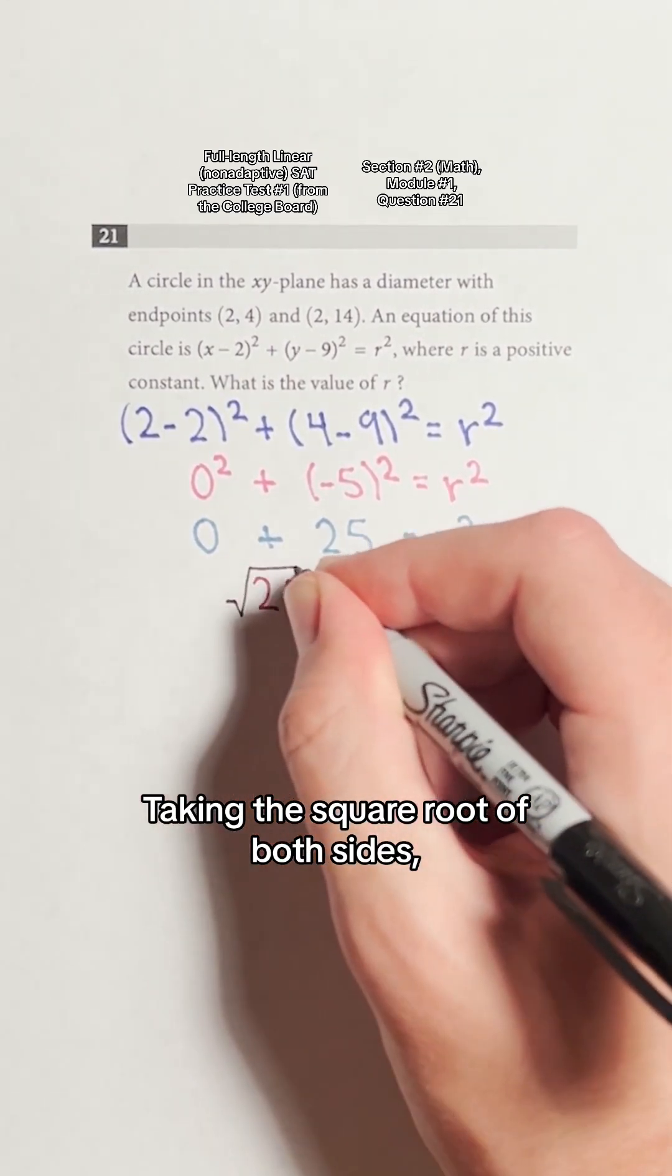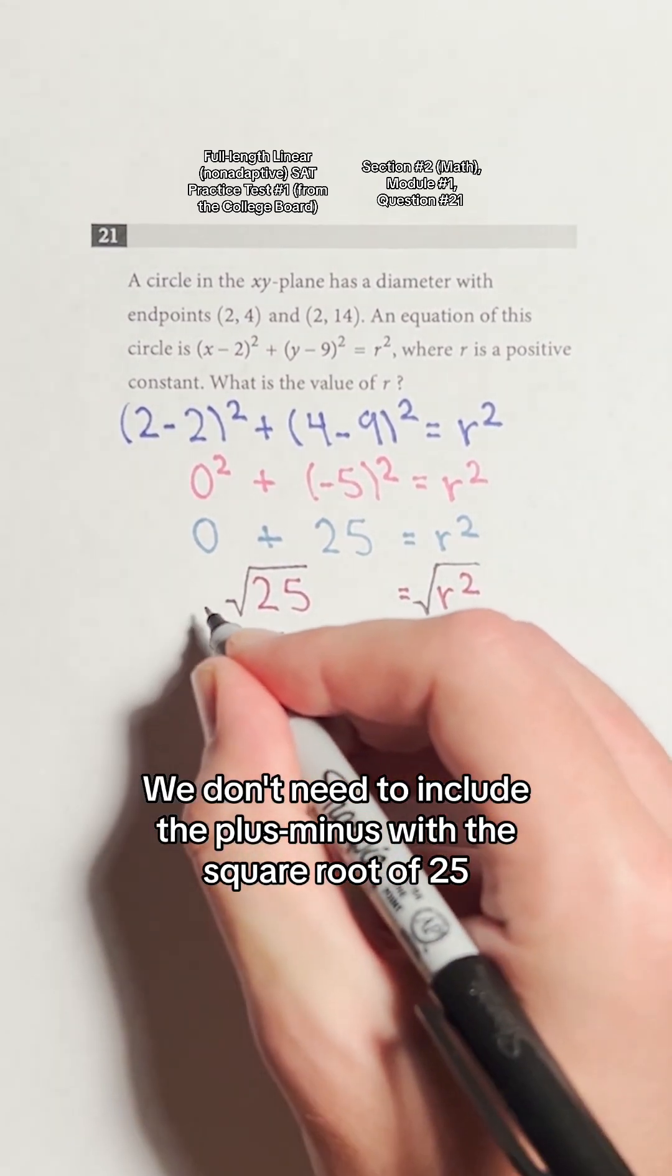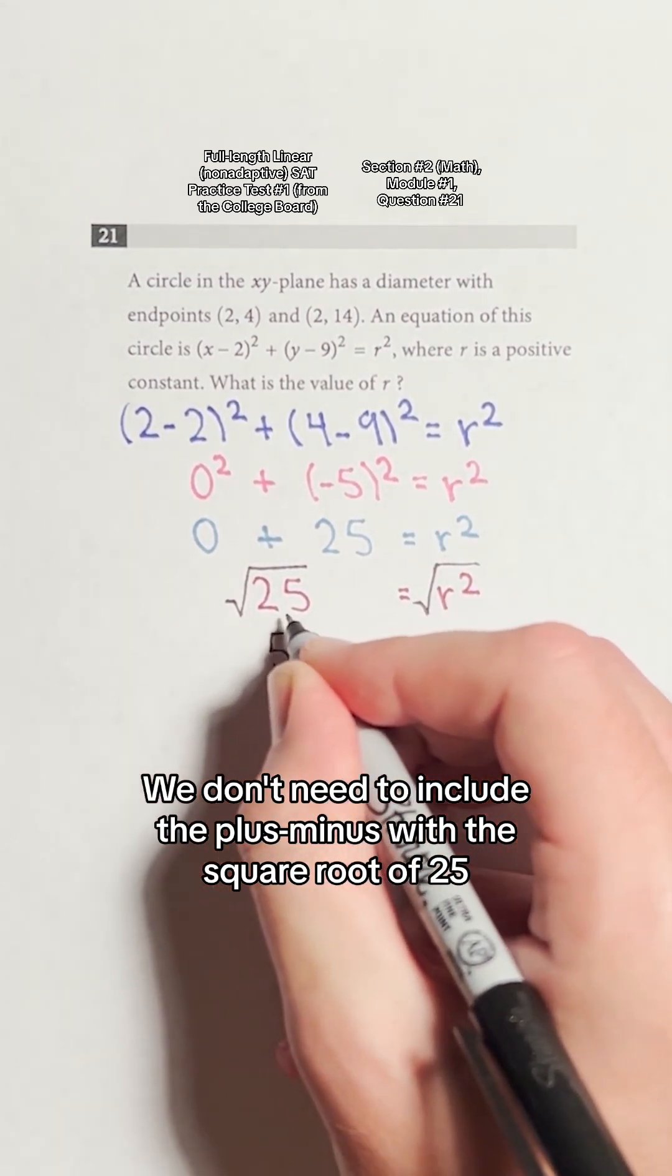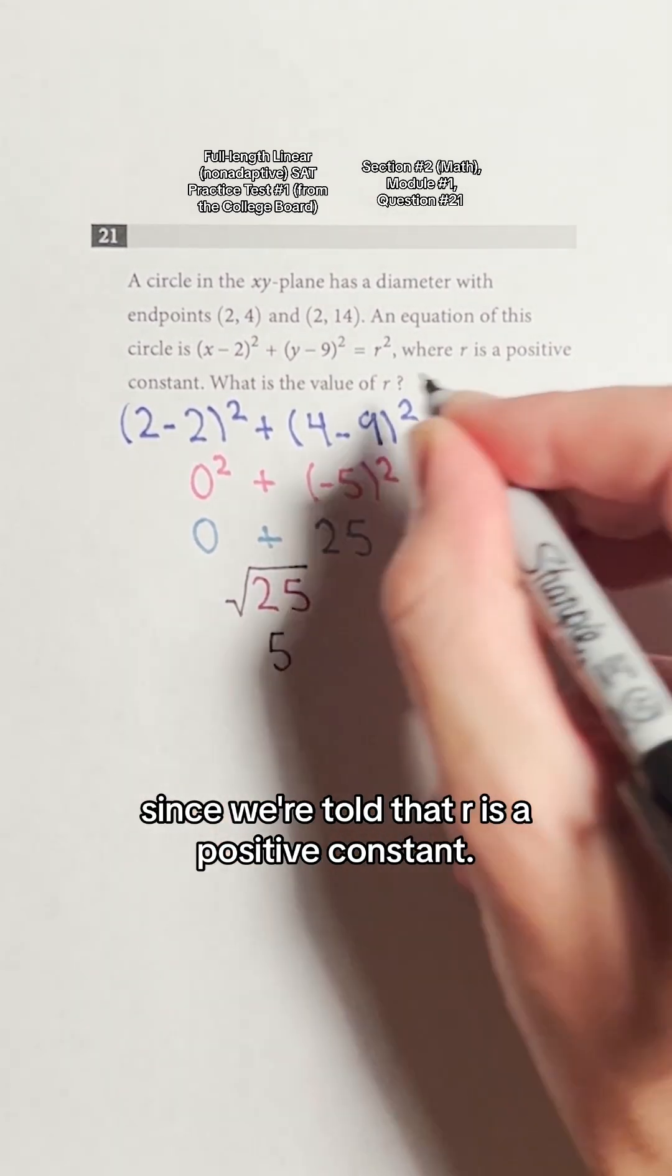Taking the square root of both sides, we see that r is 5. We don't need to include the plus minus with the square root of 25 since we're told that r is a positive constant.